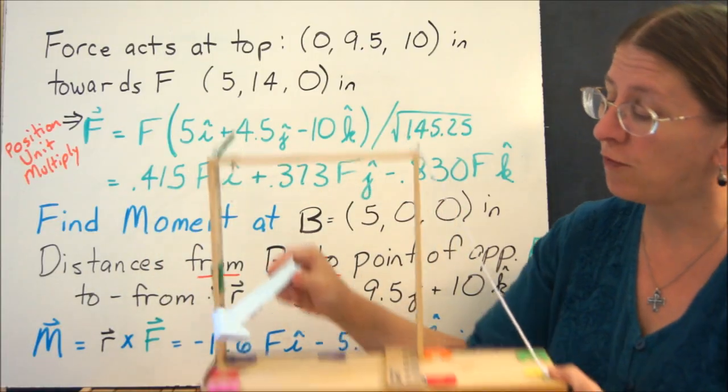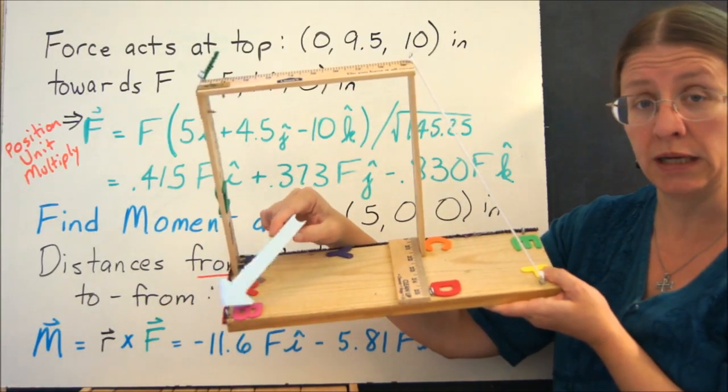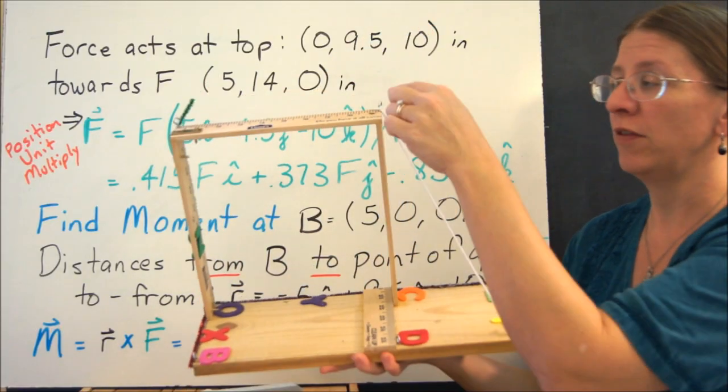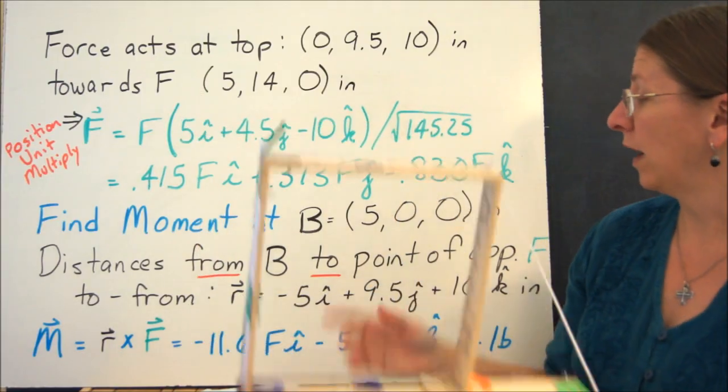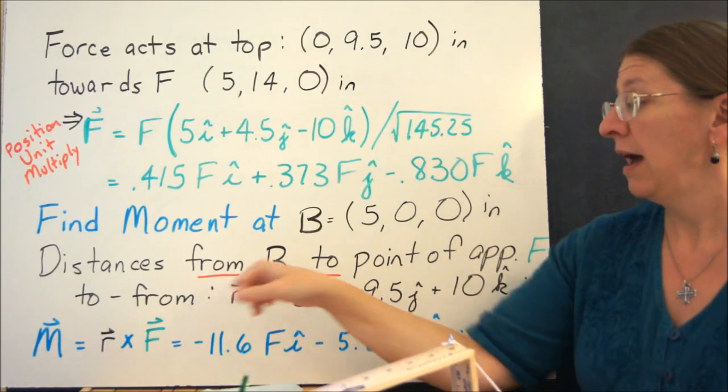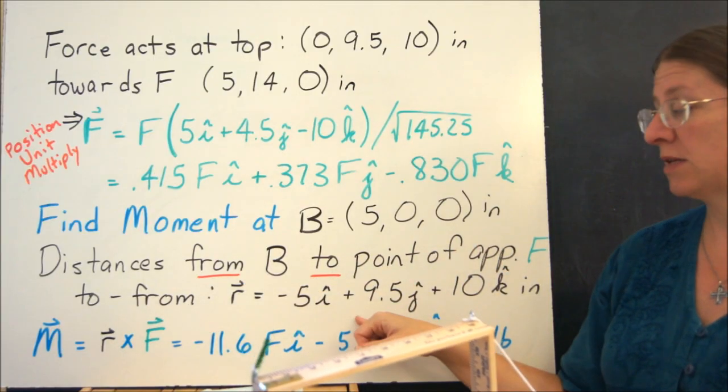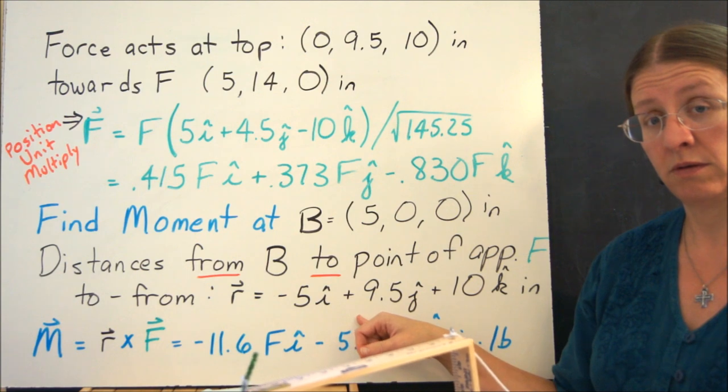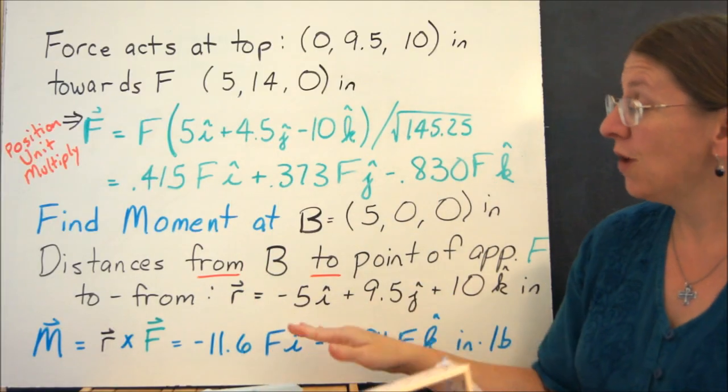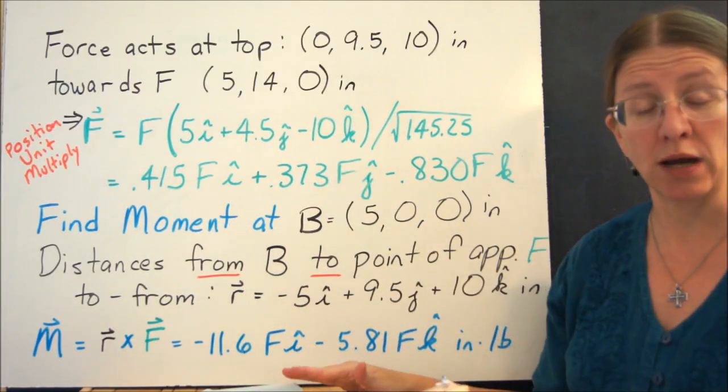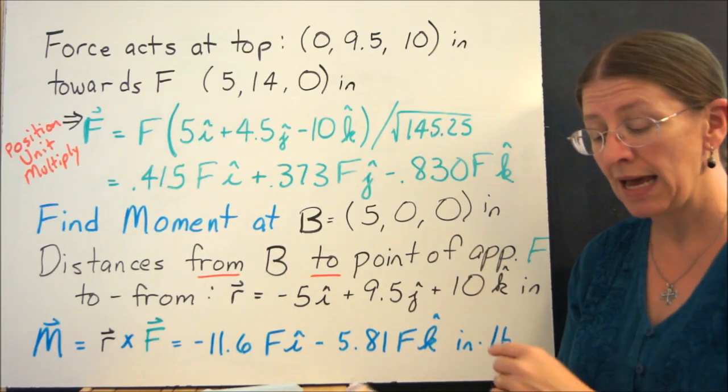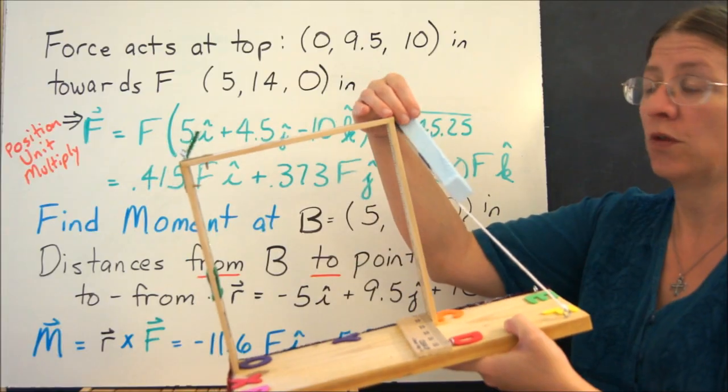My R goes from the point I'm interested in, B, to the point of application of the force. So my R vector is going to go this way. When I find that, I have B's at 5 inches. If I go from B up to the top, this is my R vector from the point of interest to the point of application of the force. Once you have R and F, you can take the cross product, plug it into any calculator or computer that you'd like, and this is the moment at B due to this force.